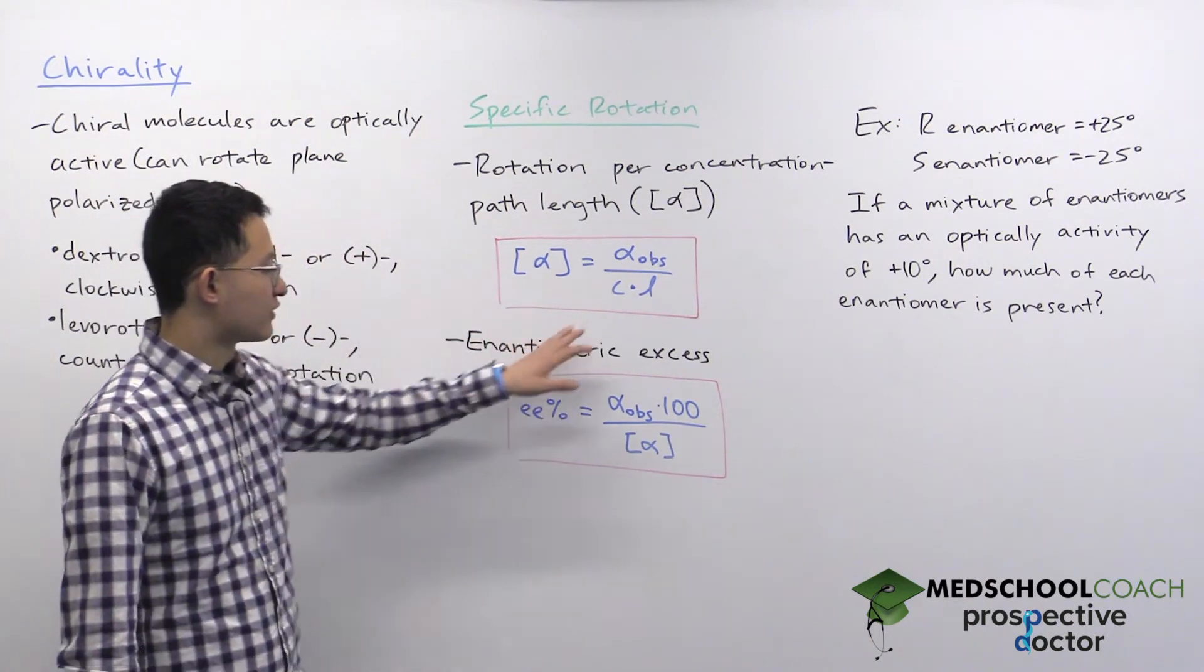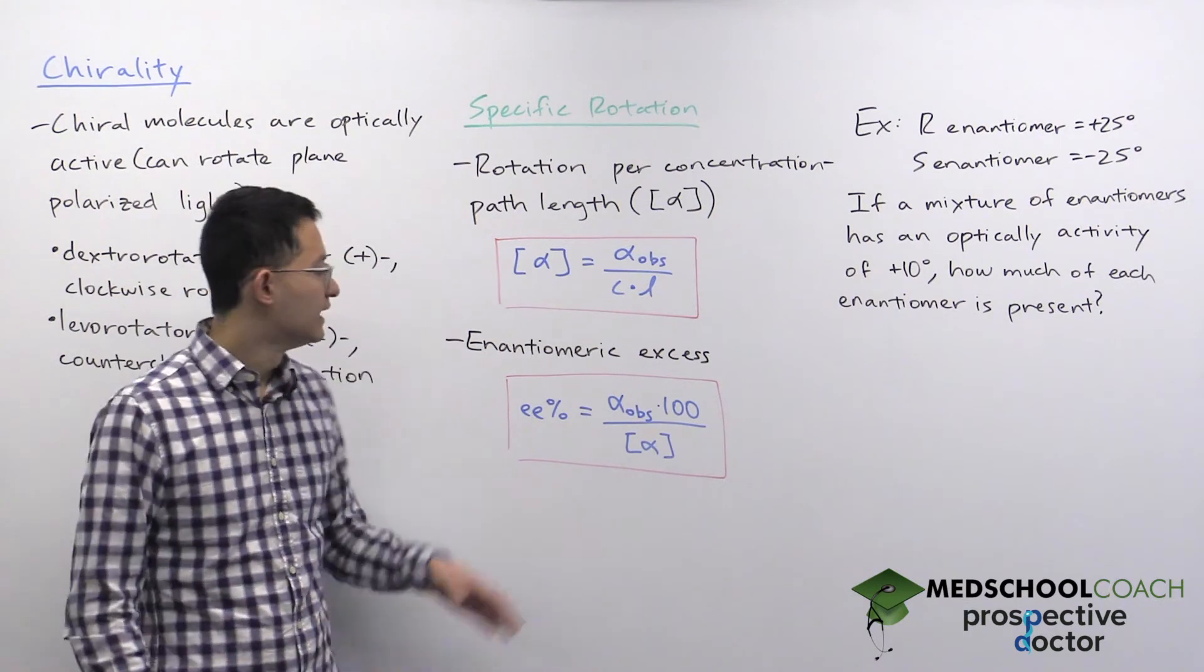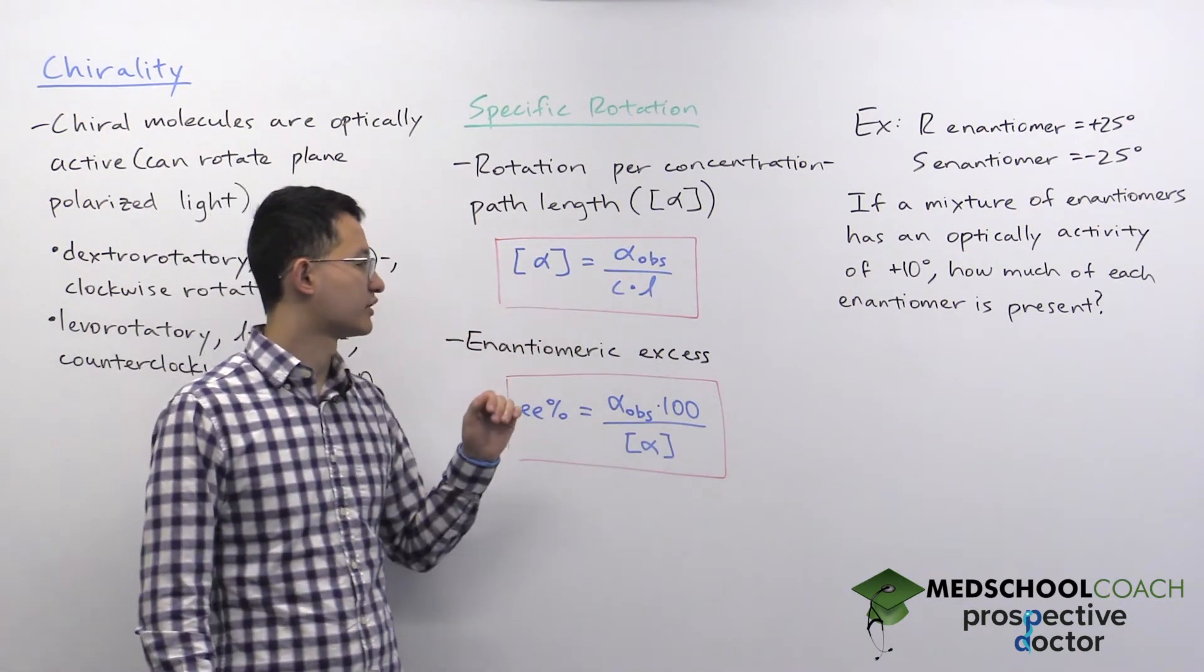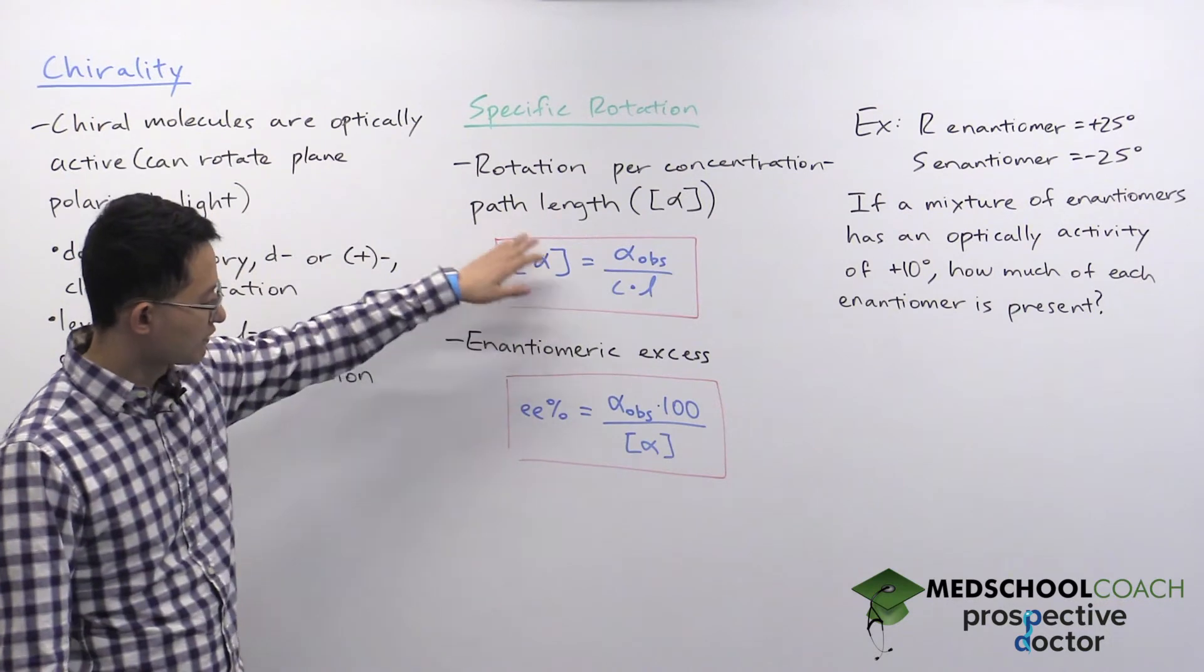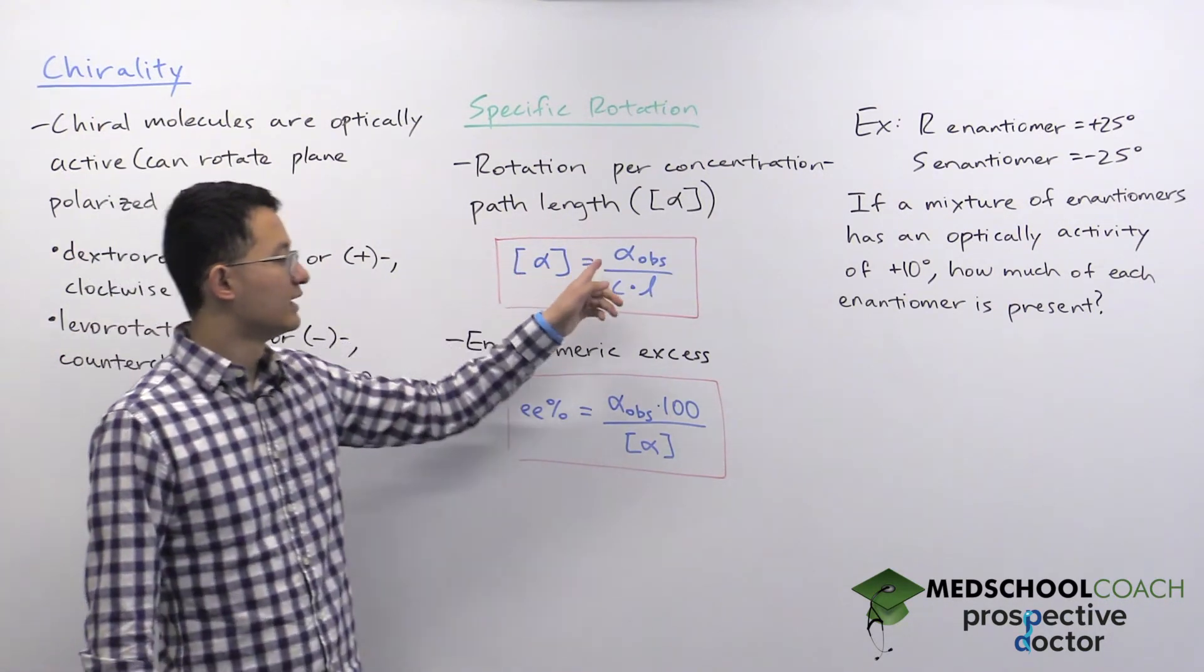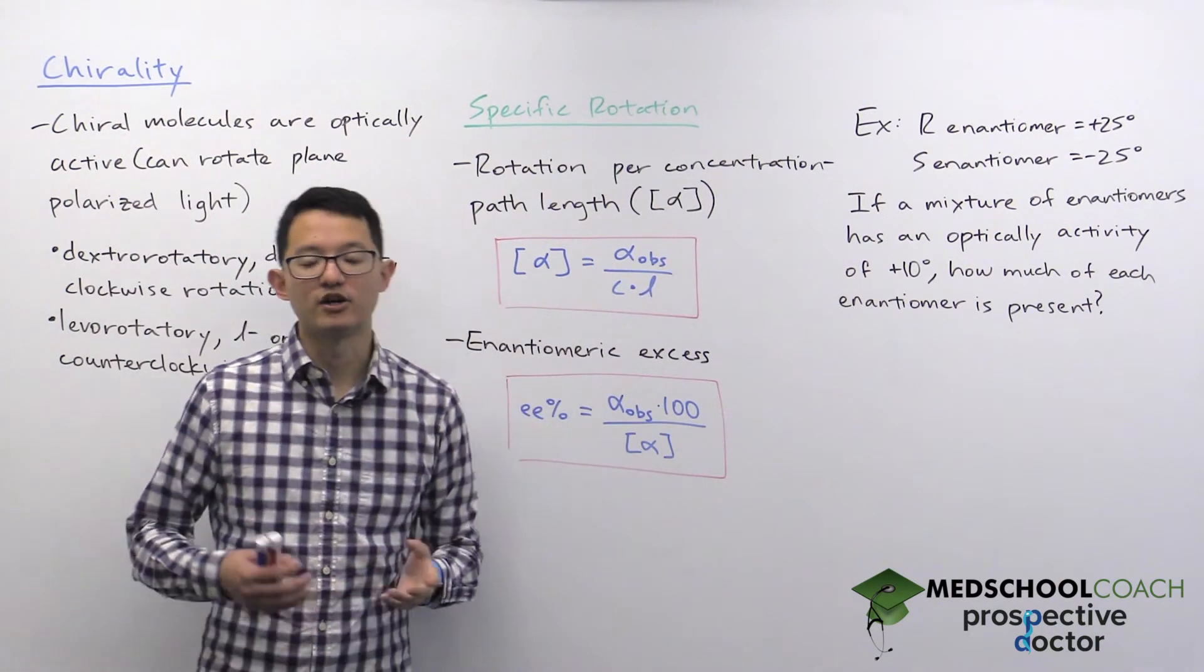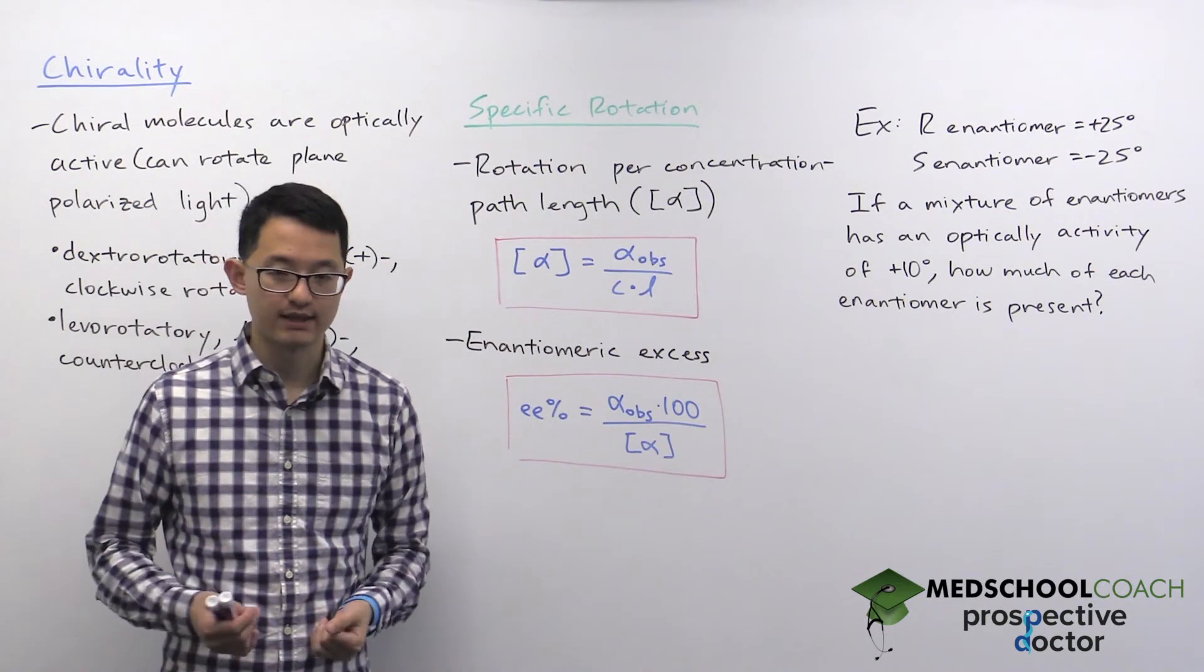By normalizing for both concentration and path length, you're able to get a consistent value that is intrinsic for each molecule. So the specific rotation, which is alpha in brackets, is calculated by looking at the observed rotation and dividing by the concentration of the solution and the path length.